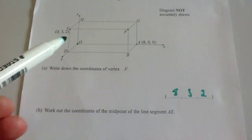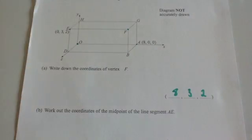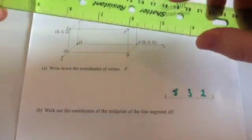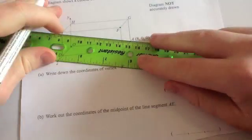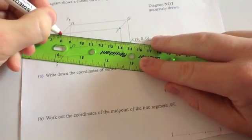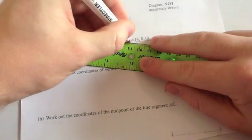The next bit then says work out the coordinates of the midpoint of the line segment AE. So let's just look at where AE is. So here's E and here's A. So if I just draw that diagonal line on the diagram, it would look something like this.